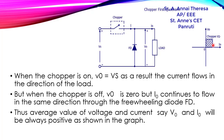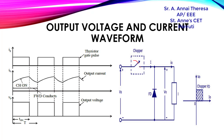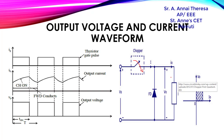We can explain this using the waveform. When the switch is closed, current flows through the load and the freewheeling diode is not in conduction. So when the switch is on, we get the output voltage V0 which is equal to Vs — the supply voltage appears across the load — and we get both output voltage and output current.